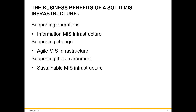The three primary areas an enterprise architect focuses on when designing MIS infrastructure include supporting operations, supporting change and supporting the environment. Supporting operations uses information MIS infrastructure, which identifies how and when important information is maintained. Supporting change utilizes agile MIS infrastructure, which includes hardware, software and telecommunication equipment to support the organization's goals.